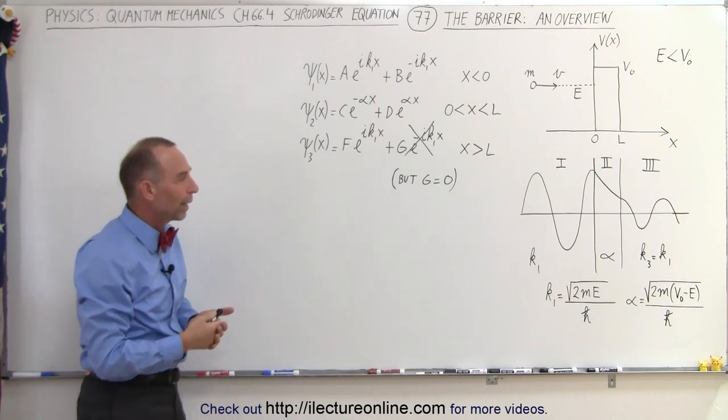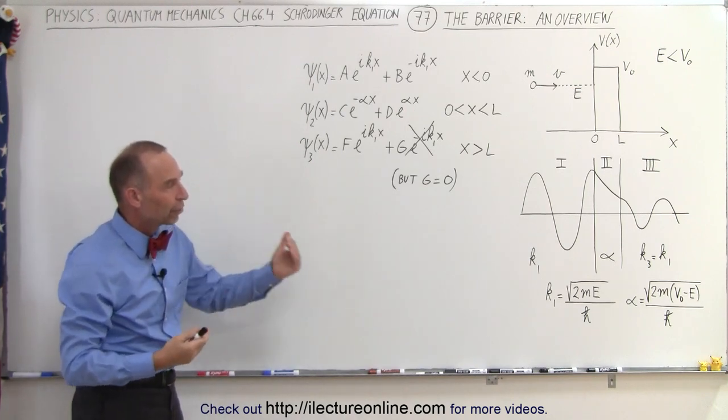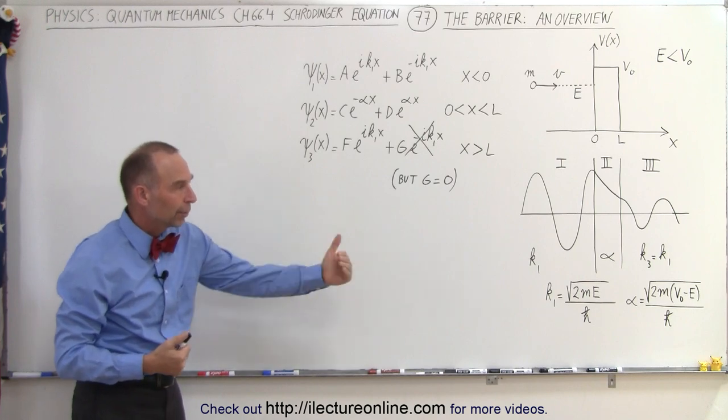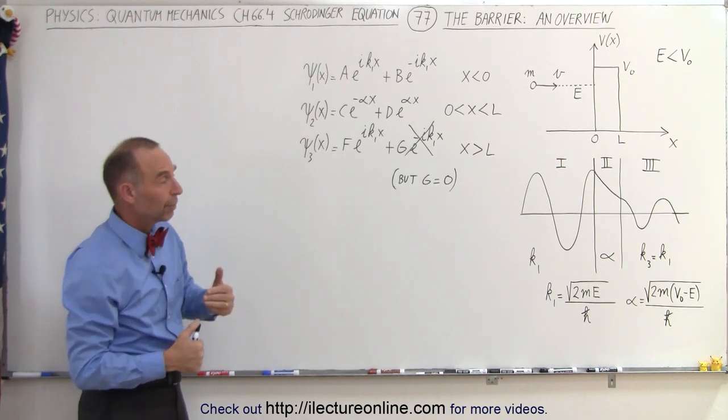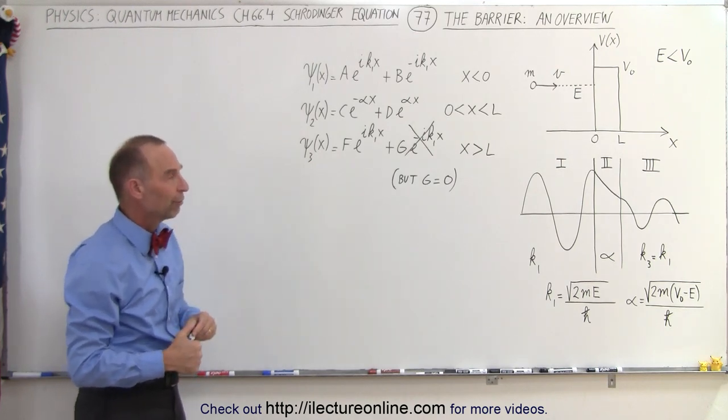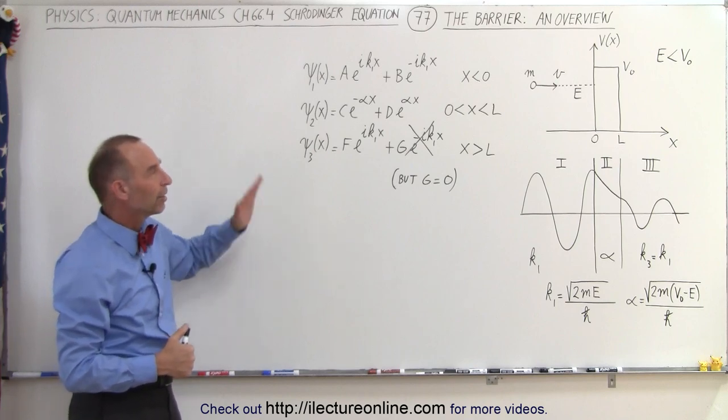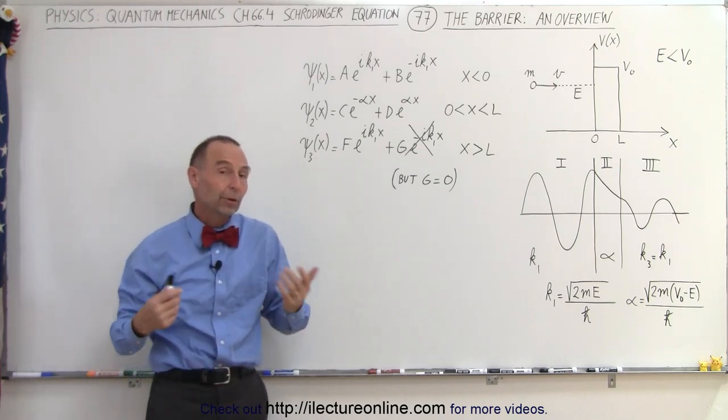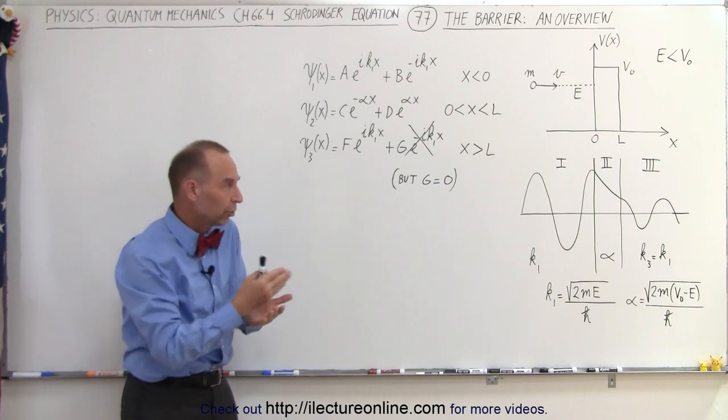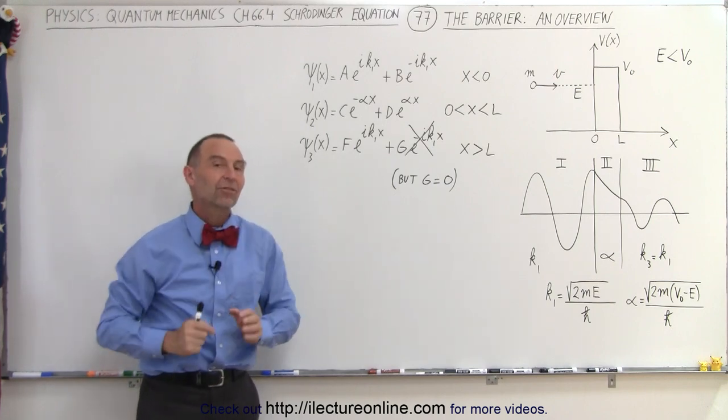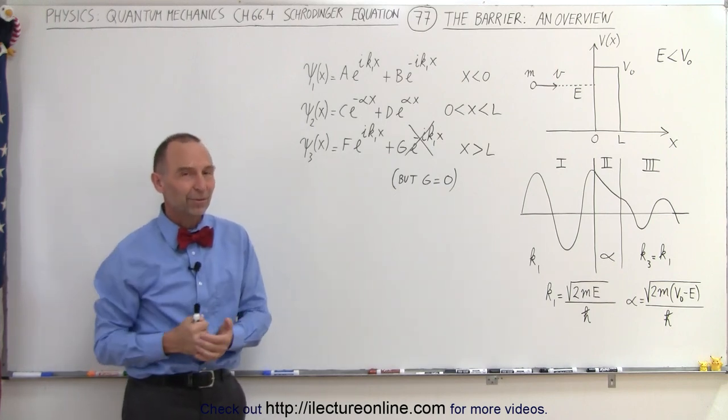So we'll show you how to calculate how far through the barrier it will go, what the amplitude will be once it passes through the barrier, how it will decay, and so forth. So we'll figure out all those things, but here's a general overview of what it looks like when a particle actually tunnels through a barrier that's not too wide. That's how it's done.